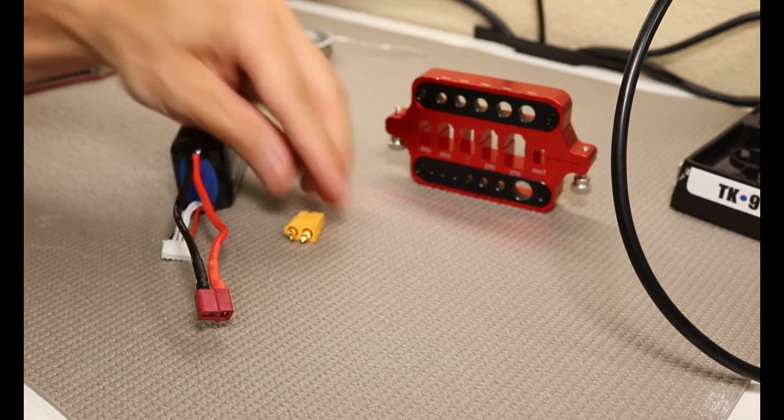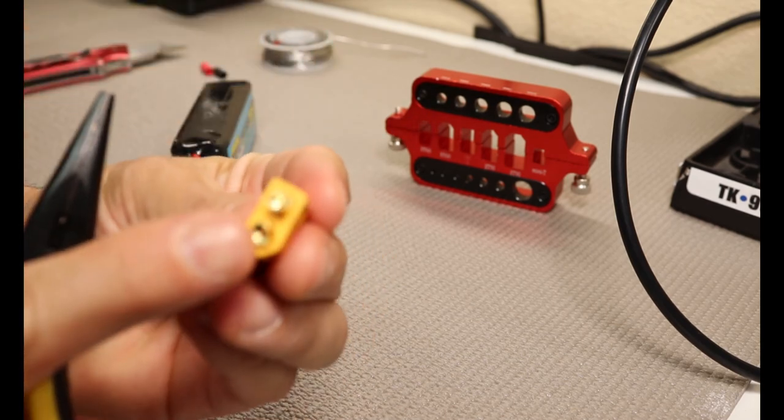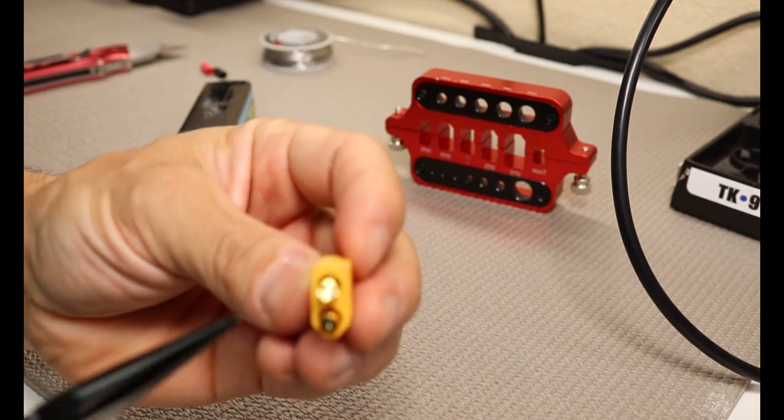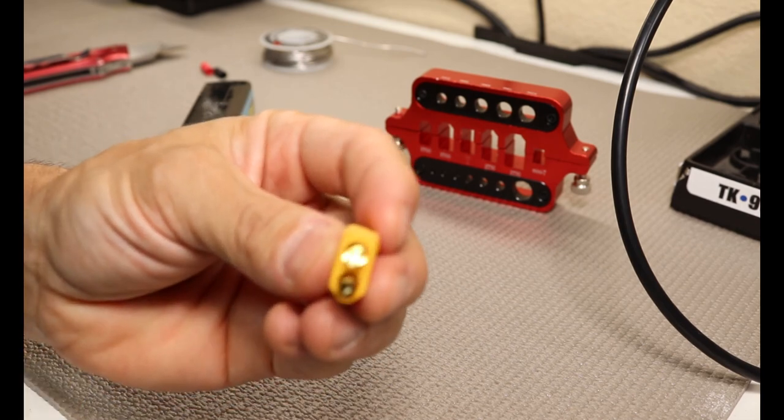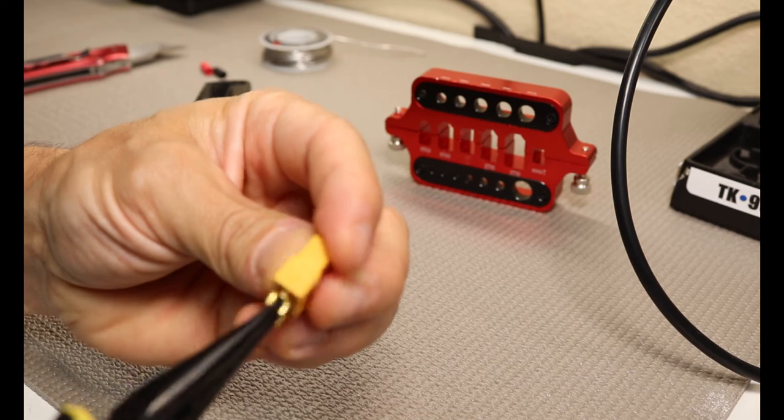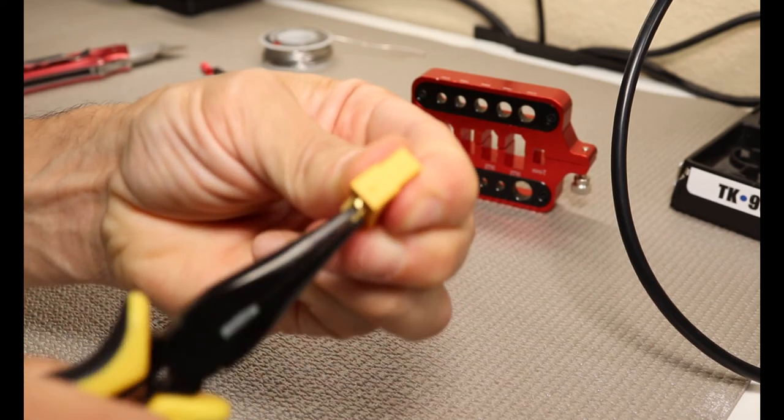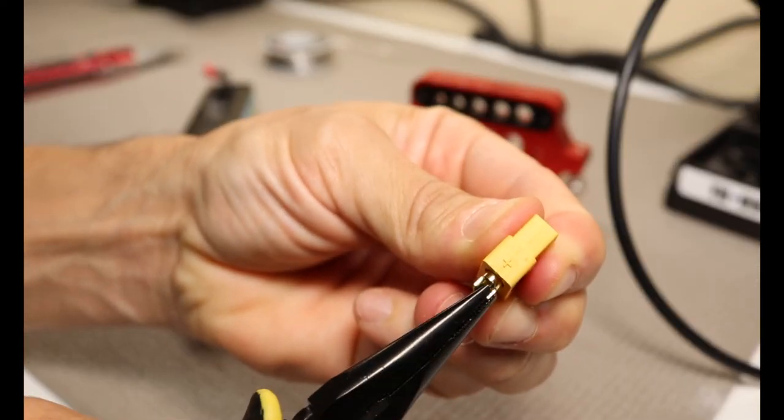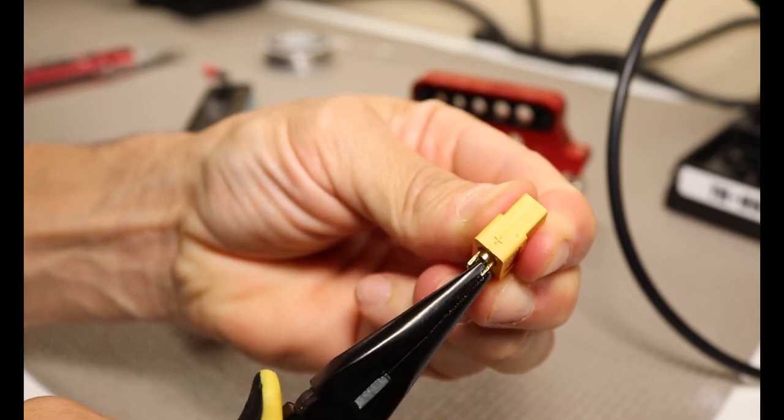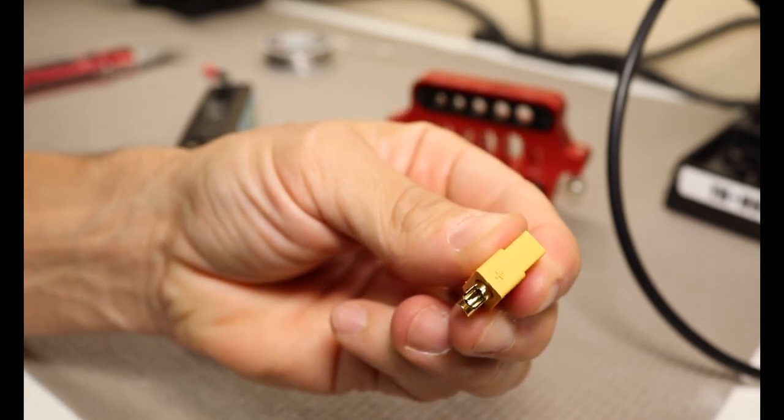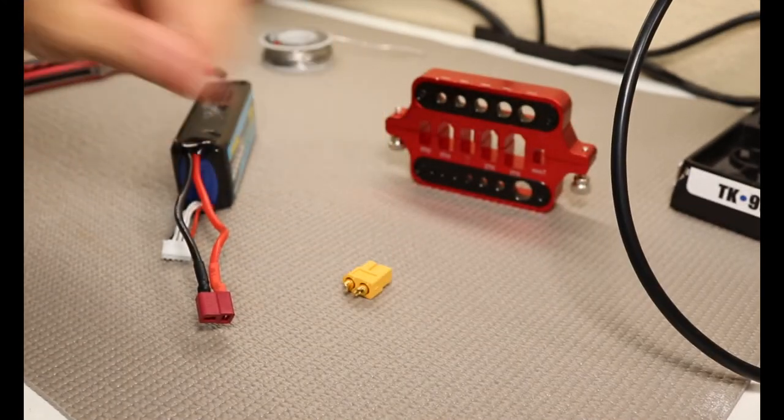So one of the cool things about the XT series connectors is the actual individual pins rotate. So if you did solder it on there and weren't happy with the position, you can just twist it. You can see this guy here. These guys actually rotate in there so it helps you to be able to make sure that your solder job comes out cleanly.